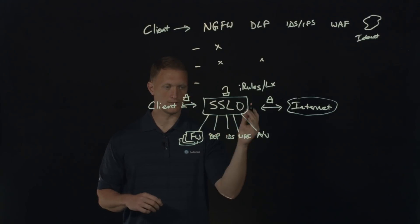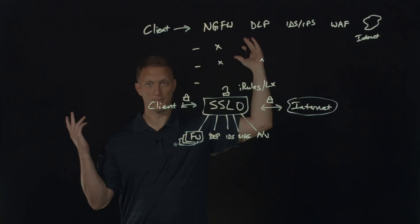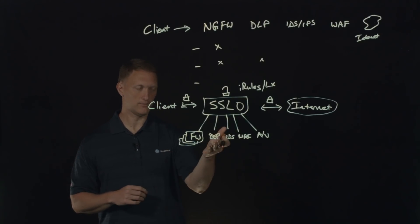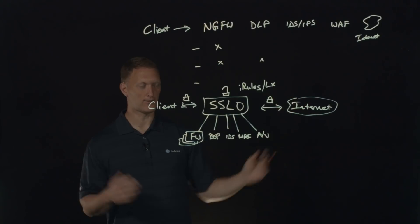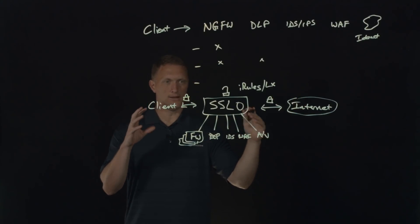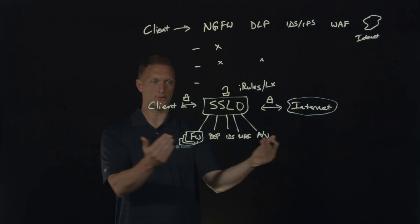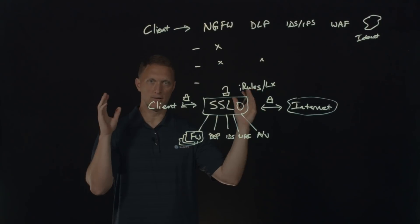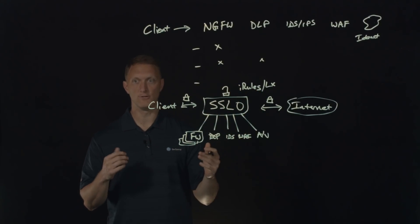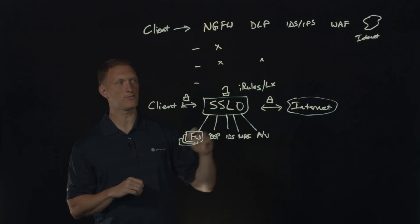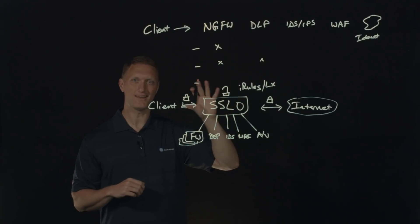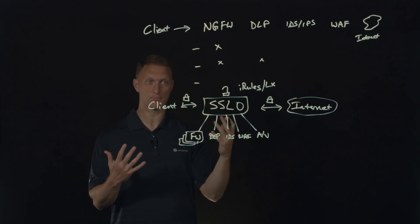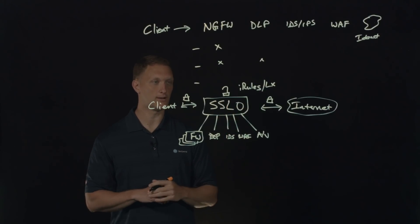If one device fails — say your data loss prevention goes totally offline — had that happened in a daisy chain scenario the whole chain would be completely broken. Here with the SSL Orchestrator, you're still sending traffic to all the other devices. While you'd love to have the DLP online, it doesn't completely break the entire thing. So for all those reasons it's good to have this centralized orchestration device you can plug all your other devices into. On the surface one uber device sounds cool, but when you look deeper, there are real issues with going that direction.